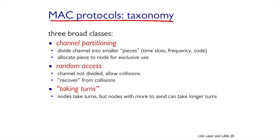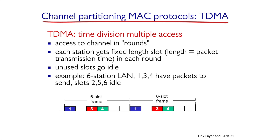The third class of MAC protocols uses features of both previous classes. We will start with an example of the first class, where the link is divided exclusively between the nodes according to time — this is TDMA. Each node is assigned a time slot, and in that time slot only one packet can be transmitted. With six nodes competing for the same link, the first, third, and fourth nodes want to transmit, while the second, fifth, and sixth nodes don't. If a station has no packets to transmit, the bandwidth is wasted and other nodes cannot use it. Another downside of TDMA is the delay until a particular node can access and transmit again.